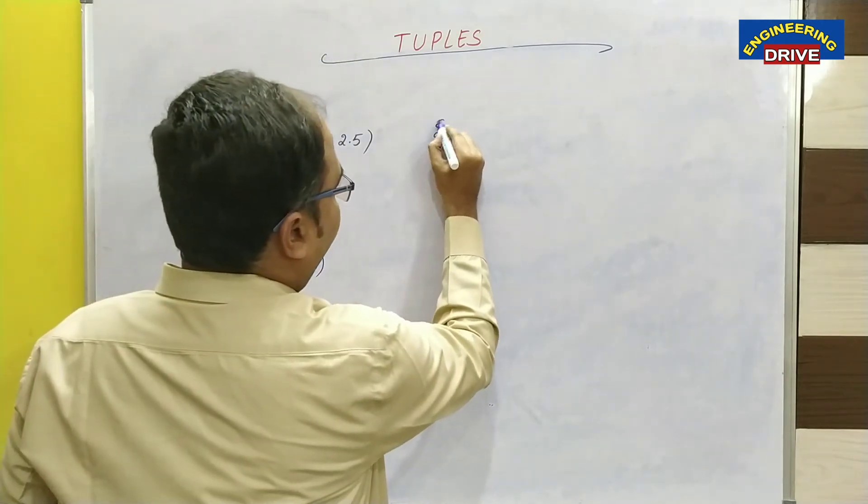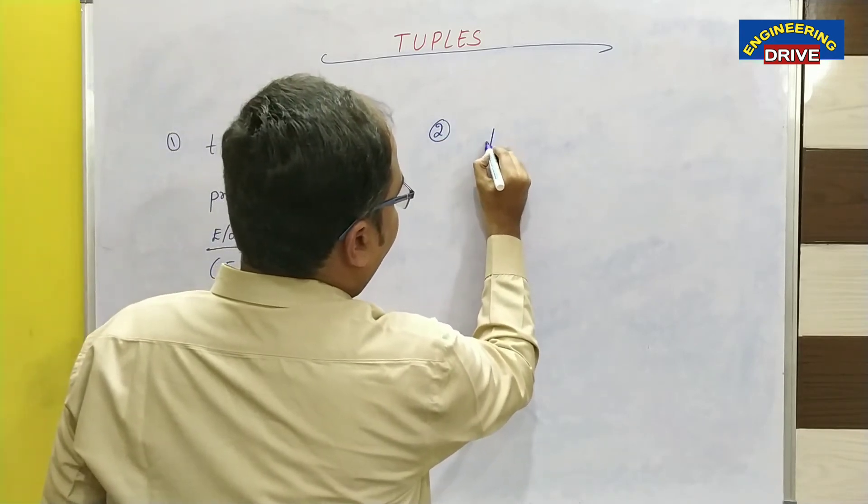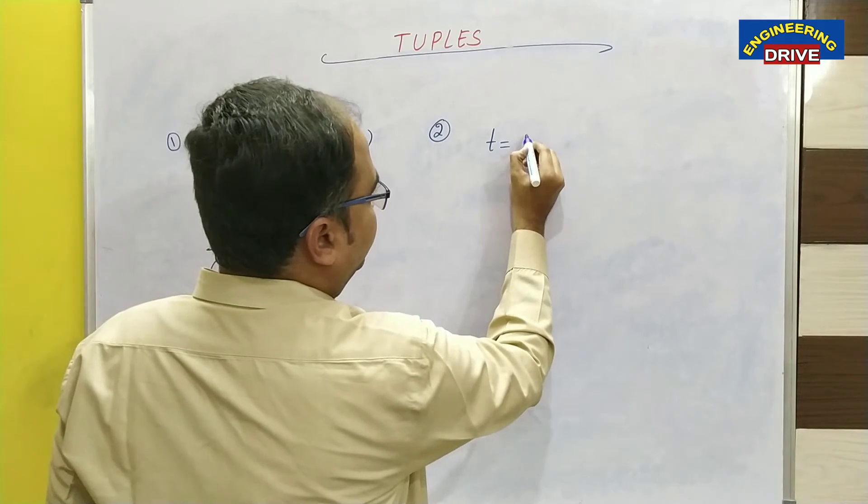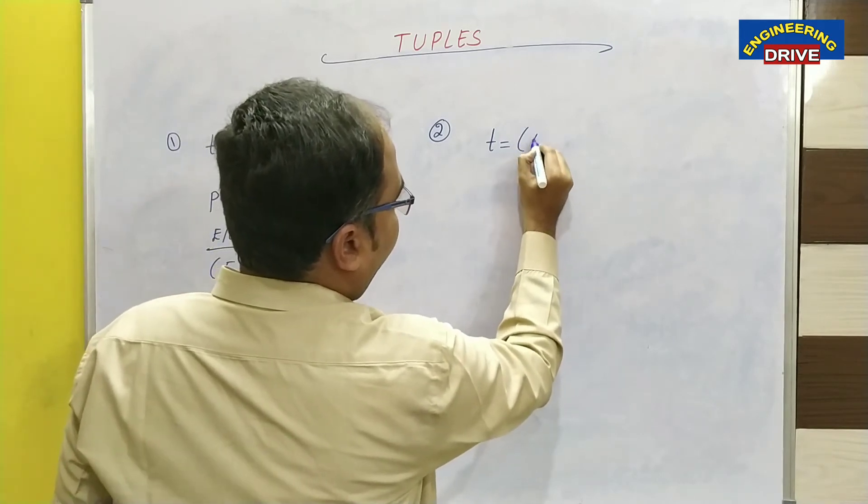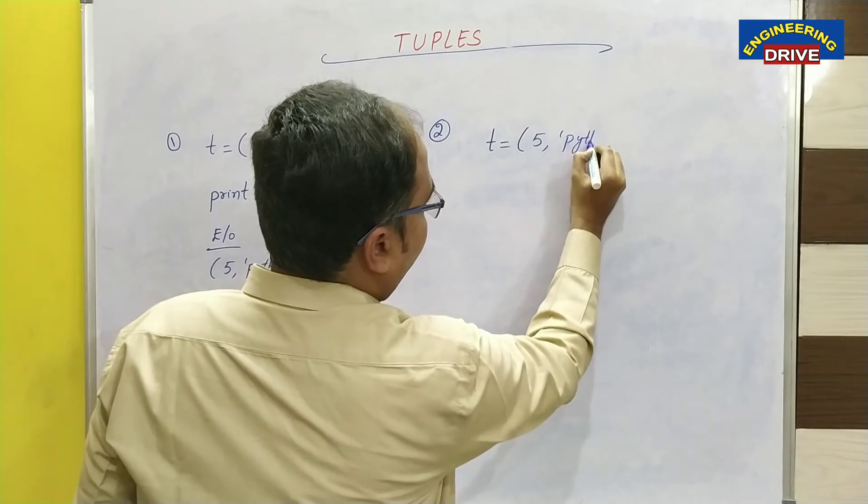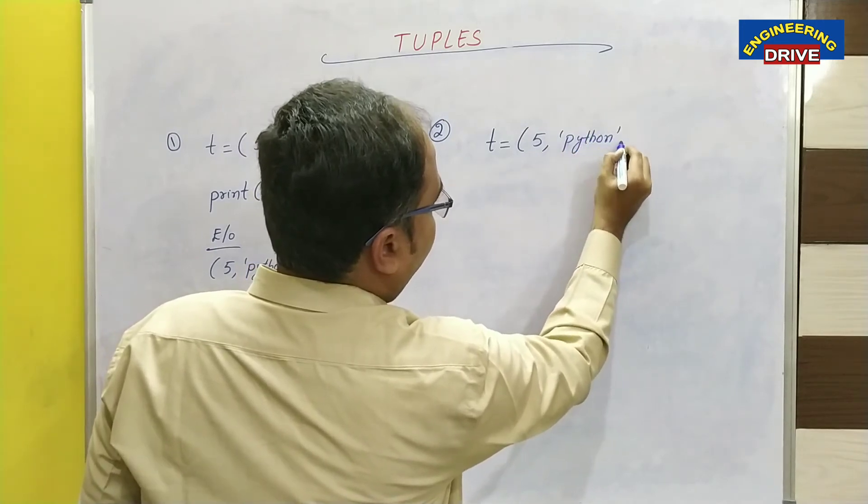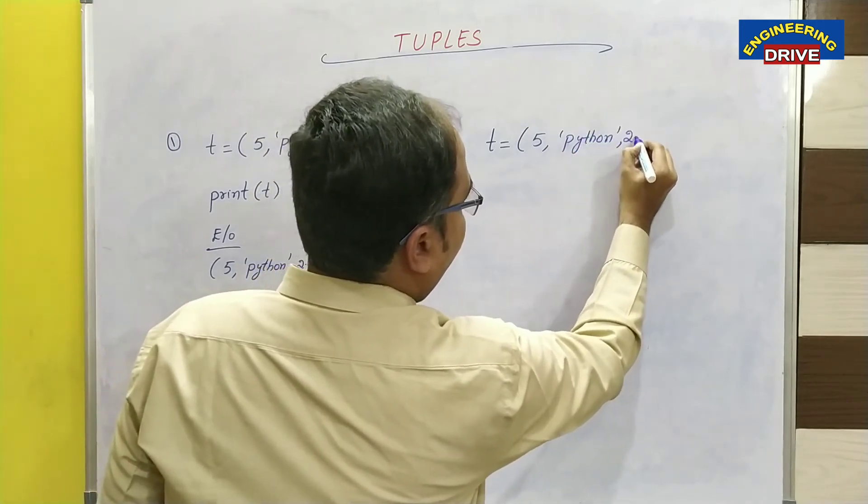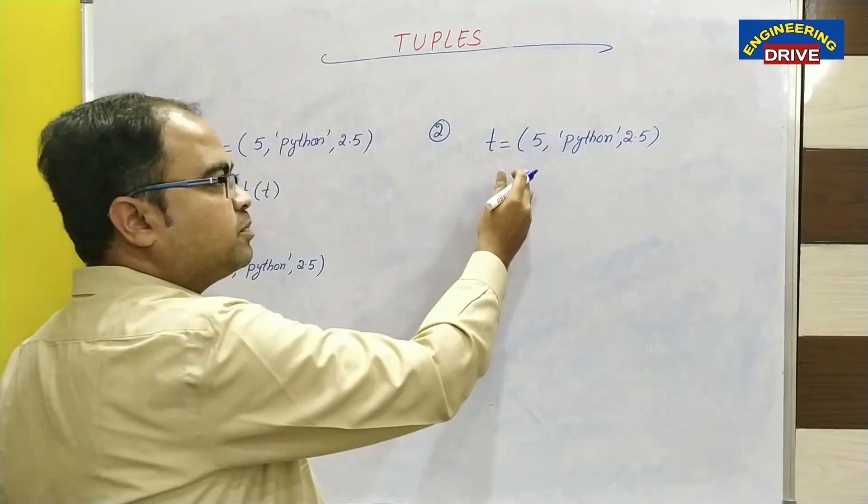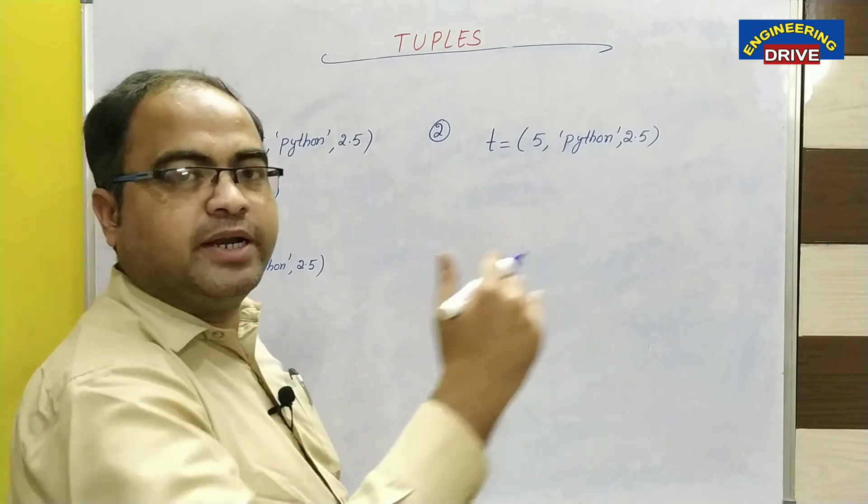In the second example program, let us take a variable which represents the tuple t, assignment operator here, that is equal to same 5, comma, python, comma, 2.5. Now I want to display the contents of this tuple individually.